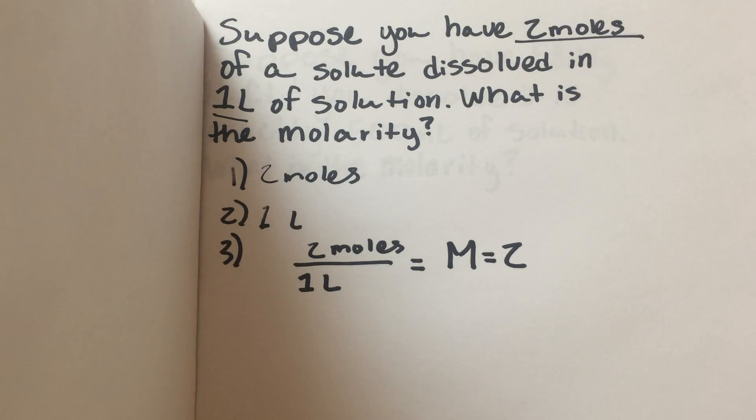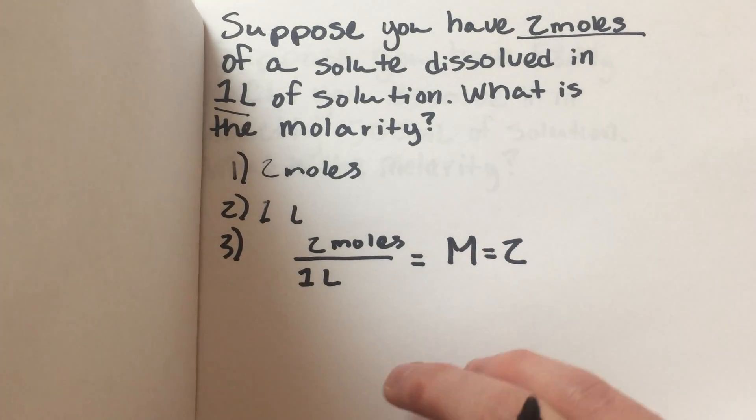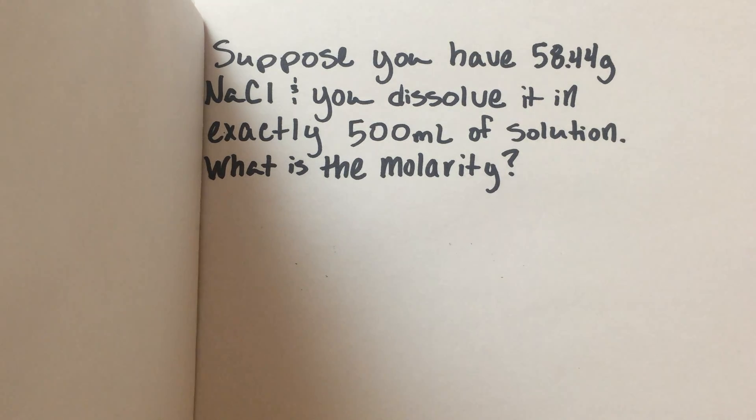Okay, so that's a pretty easy one. Let's move on to a bit of a harder one. Example four says suppose you have 58.44 grams of sodium chloride and you dissolve it in exactly 500 milliliters of solution. What is the molarity?